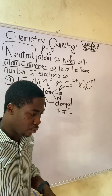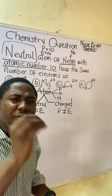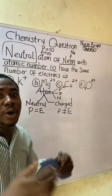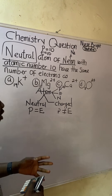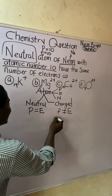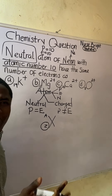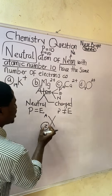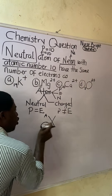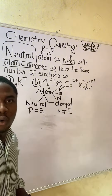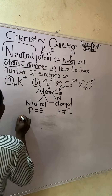Now, which of the options has 10 electrons like neon? All of these atoms in the options are charged — proton number and electron number are not the same. The proton number is the number at the bottom (Z, the atomic number). Mass number is at the top. Since these atoms are charged, we need to calculate the electron number.